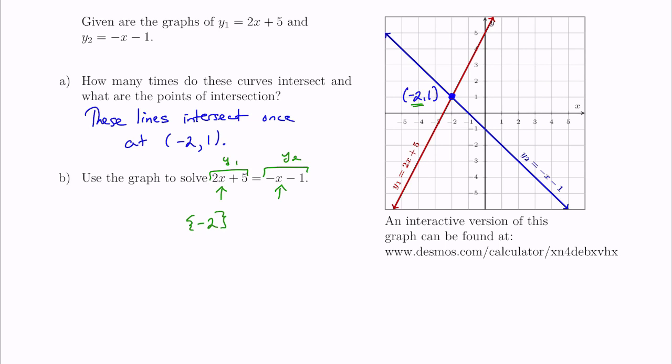Instead of solving the equation 2x plus 5 equals negative x minus 1, in Part C we'll solve the inequality 2x plus 5 is greater than negative x minus 1, or in Part D, 2x plus 5 is less than or equal to negative x minus 1. To do that, we're going to begin by looking at the interactive version of this graph on the Desmos website, which will load an interactive version.